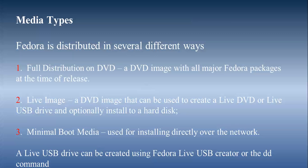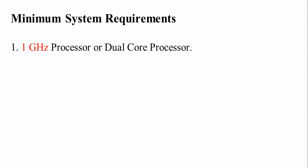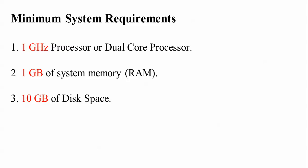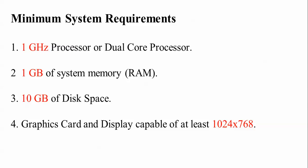Here are the types of media where you can download and install. First, the full version — you can install via DVD or pen drive. You can also use a network boot installation. This is the minimum requirement for installation: a processor of 1 GHz, 1 GB or 2 GB of RAM, and 7 GB or 10 GB of free disk space. The display resolution required is 1024x768.